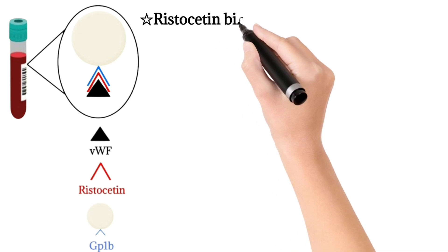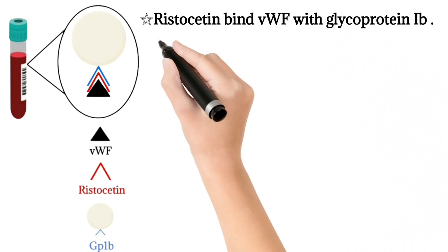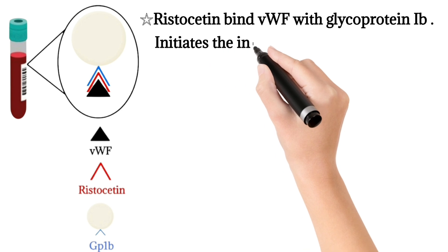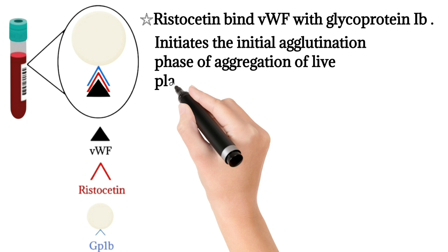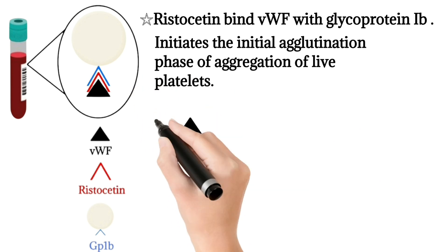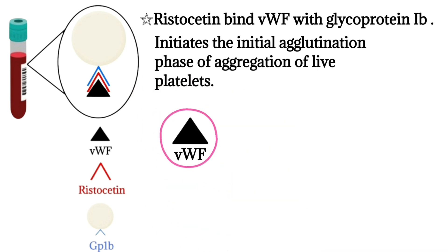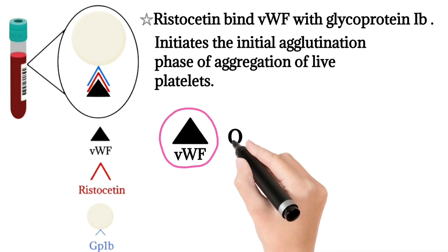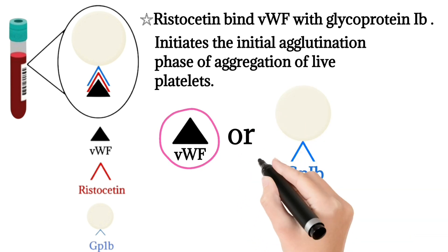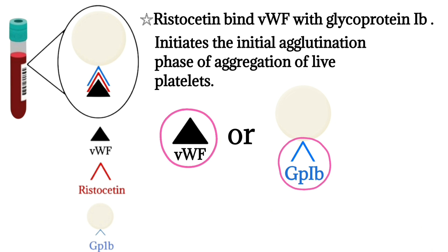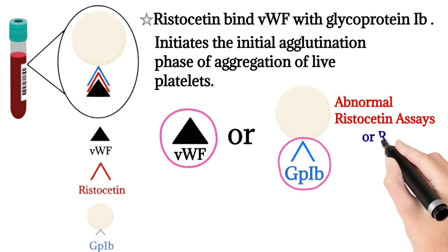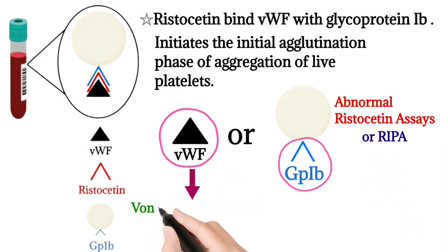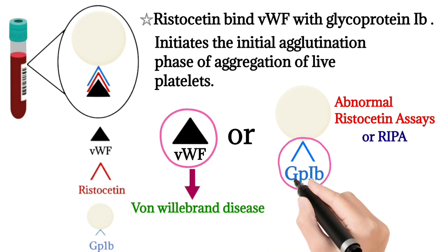Ristocetin binds von Willebrand factor with glycoprotein 1b and initiates the agglutination phase of platelet aggregation. If there is a problem with von Willebrand factor or glycoprotein 1b, it may indicate an abnormal ristocetin assay. A problem with von Willebrand factor indicates von Willebrand disease, while a problem with glycoprotein 1b indicates Bernard-Soulier syndrome.